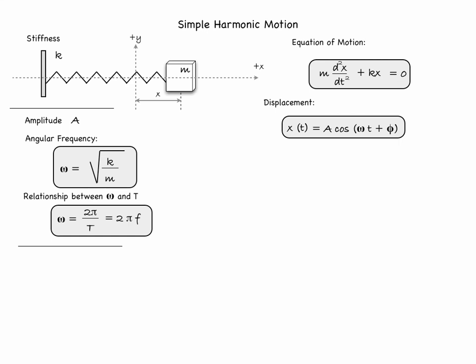So now we know the solution to the equation of motion: x(t) = A cosine(omega*t + phi), where A is the amplitude or maximum displacement, omega equals sqrt(K/M), and omega equals 2pi/T = 2pi*f. What remains is to determine the meaning of the initial phase angle phi and what its value is.